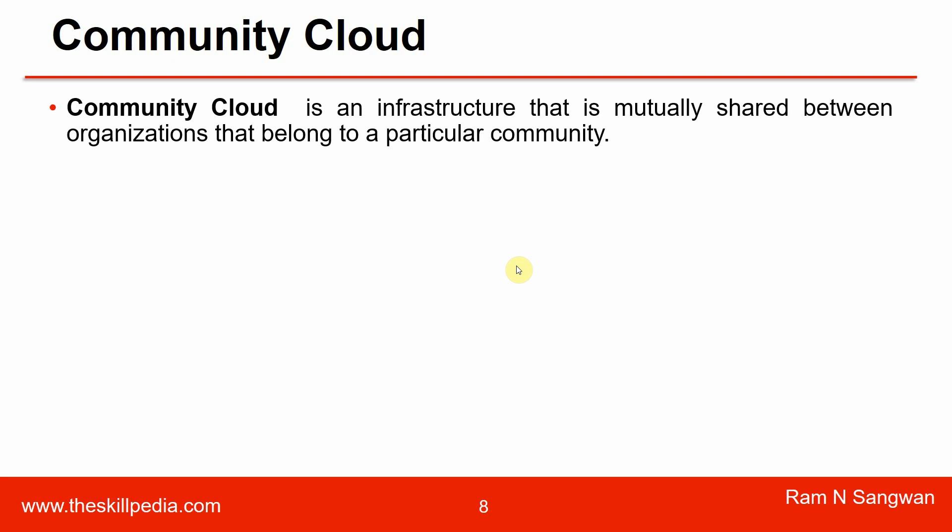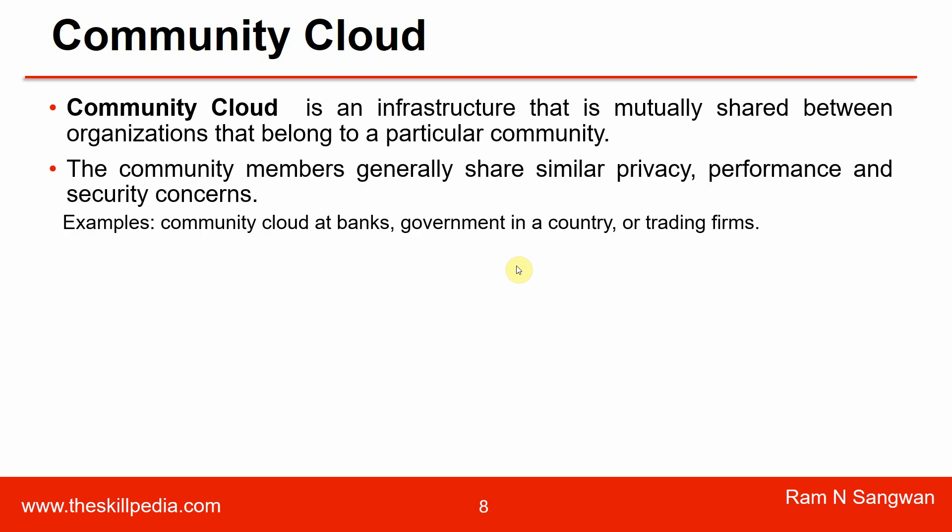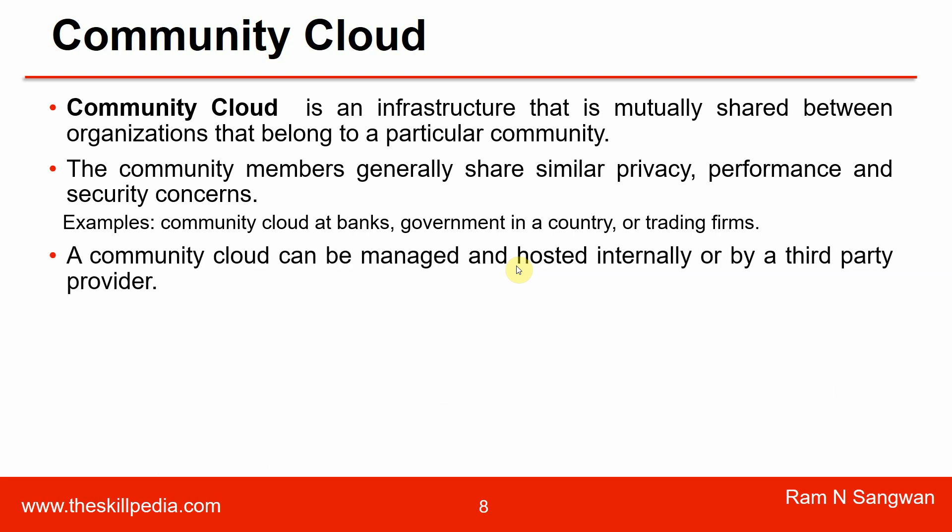Community cloud is an infrastructure mutually shared between organizations that belong to a particular community — a specific group of users. For example, in banking, the State Bank of India has its own private cloud and data center serving that specific community. Another example is NIC — the Government of India cloud — which is a community cloud not open to the public but shared within the government community. Community members generally share similar privacy, performance, and security concerns. Community clouds are used in banking, government, and trading firms, and can be managed internally or by a third-party provider.